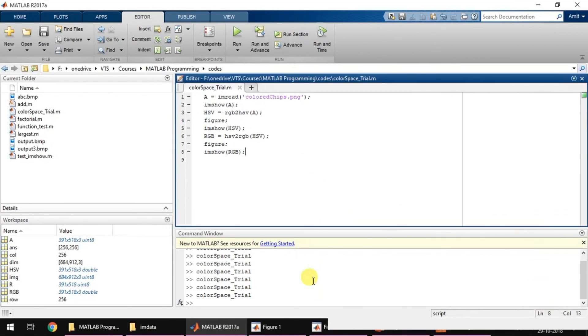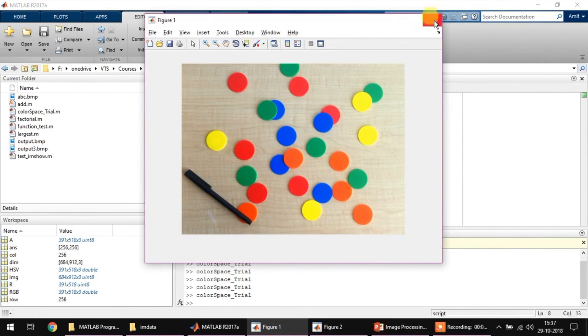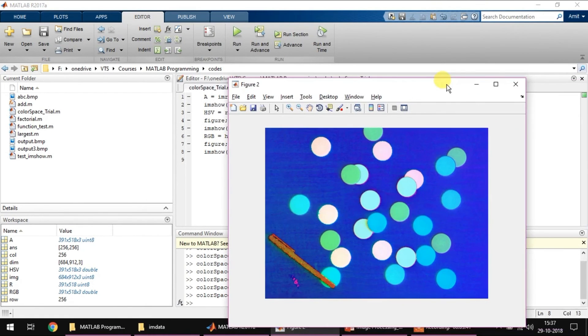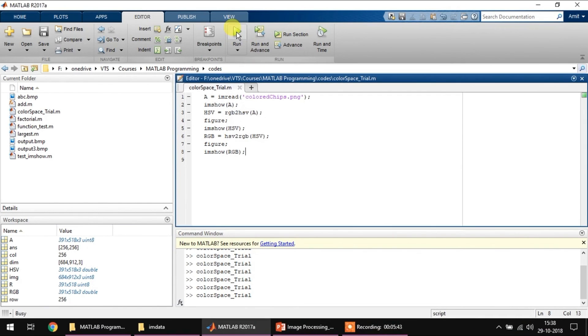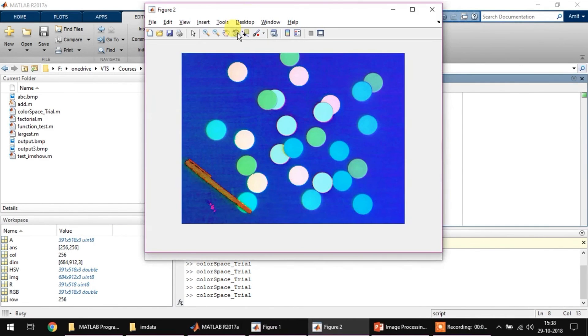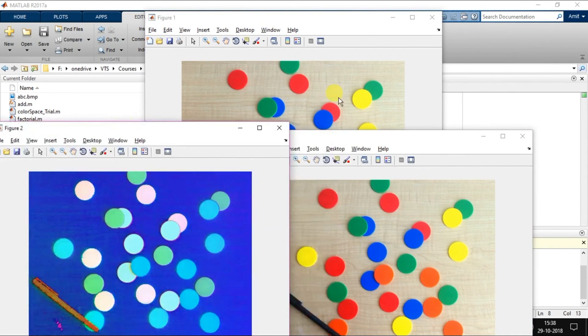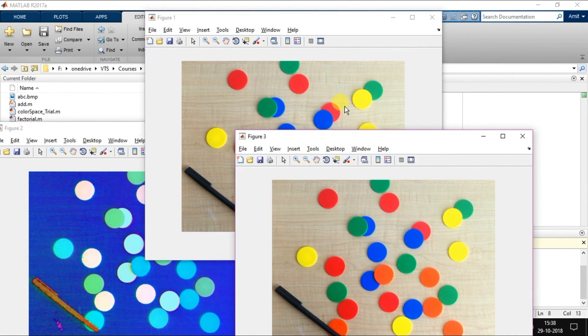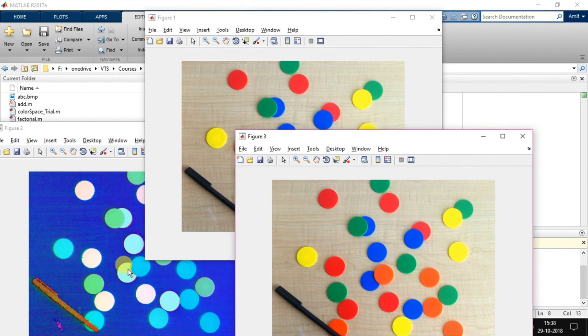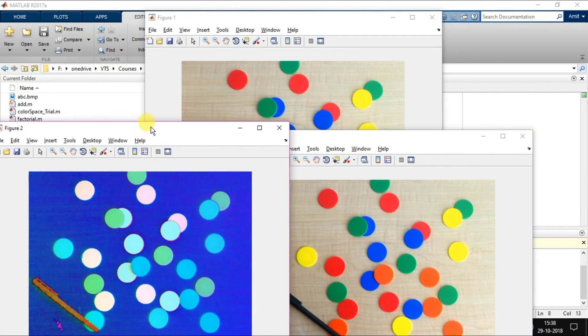I need to close some windows first which were opened before, and then I will run the program again. So figure two, figure one, and figure three are the same because these are the RGB images, and this is the HSV image.